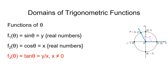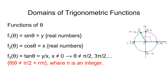The tangent of theta is equal to y over x, but x cannot equal 0. This means that theta cannot have a terminal side that lies on the vertical axis, where x equals 0. And that means that theta cannot equal pi over 2, or 3 pi over 2, or 5 pi over 2, and so on. So we can write the domain as theta such that theta does not equal pi over 2 plus n pi, where n is an integer.